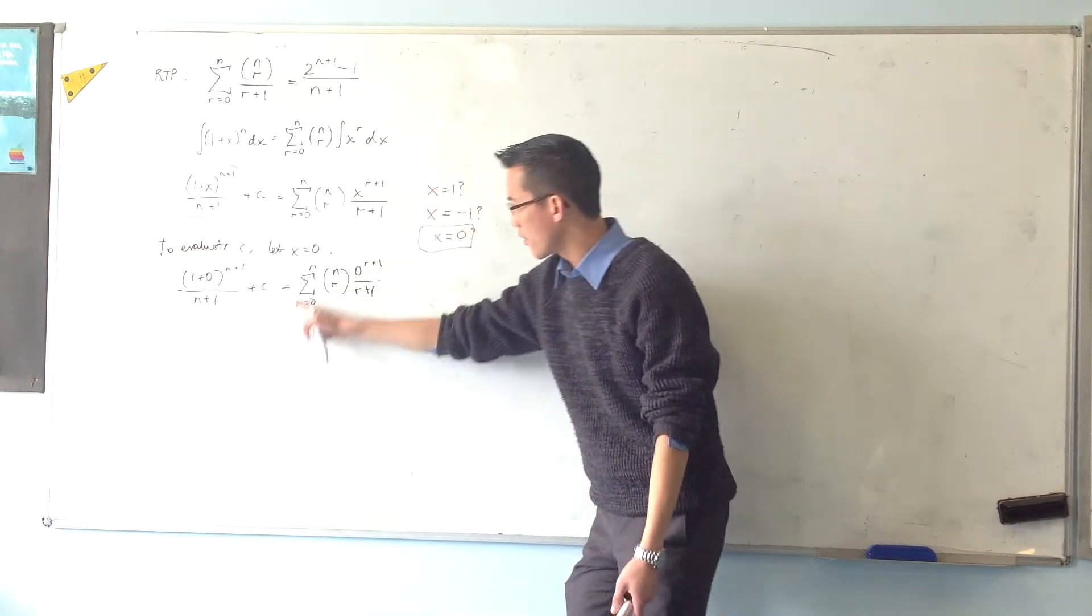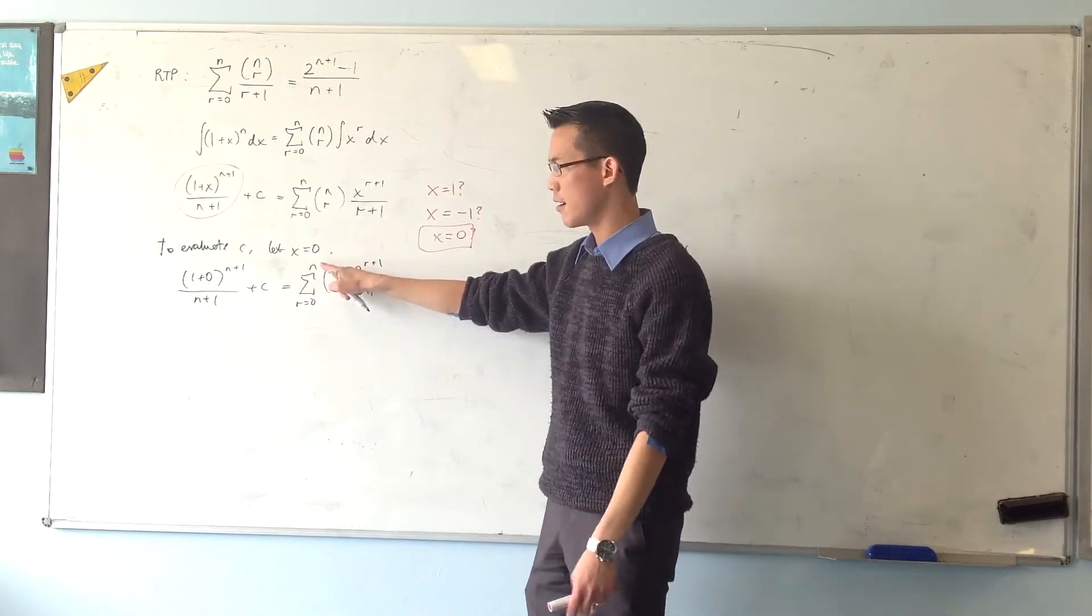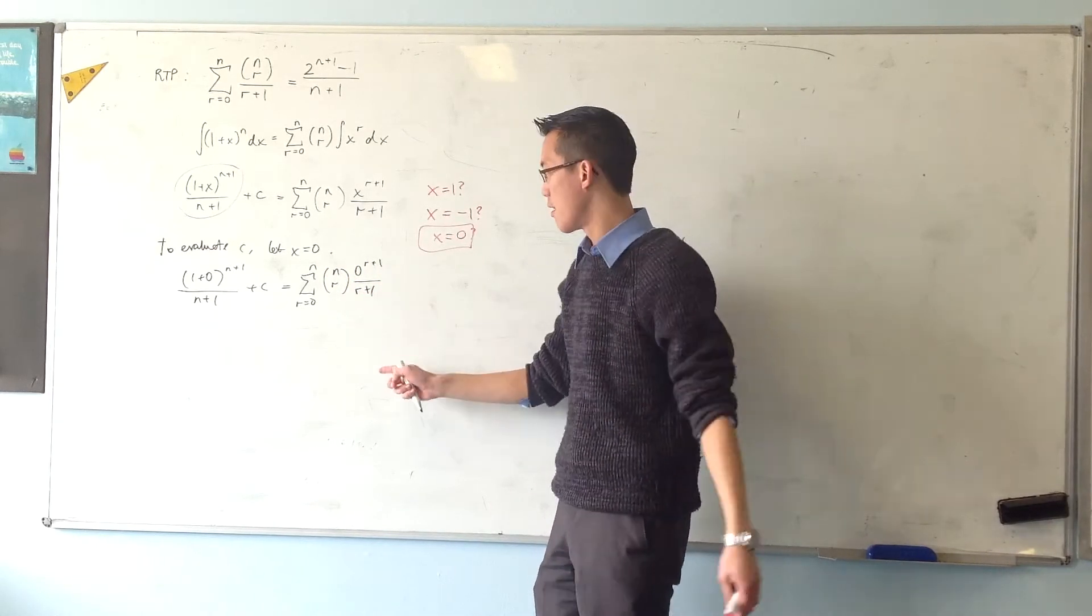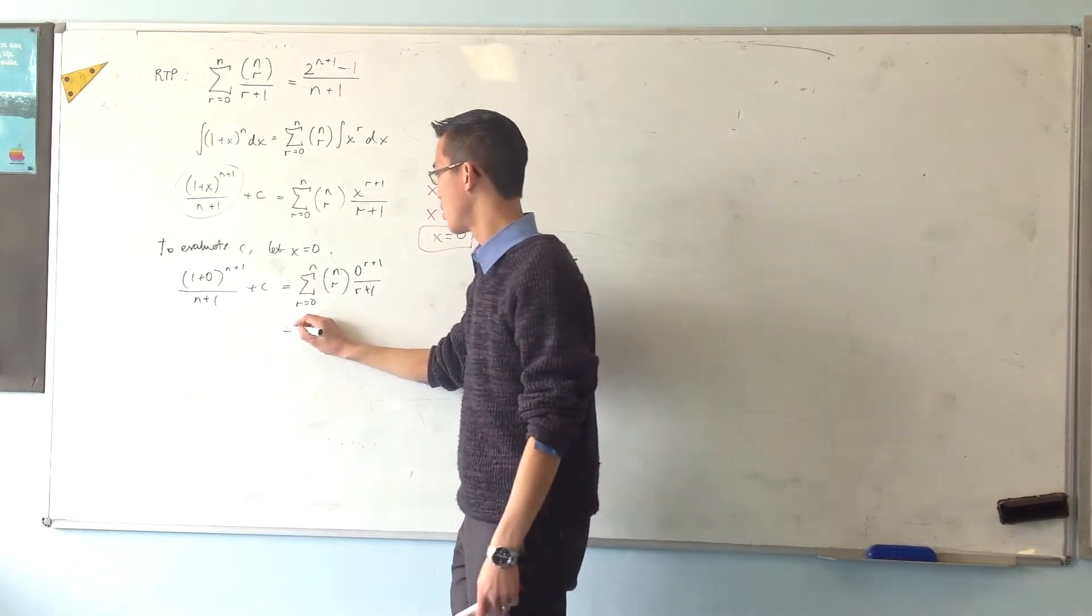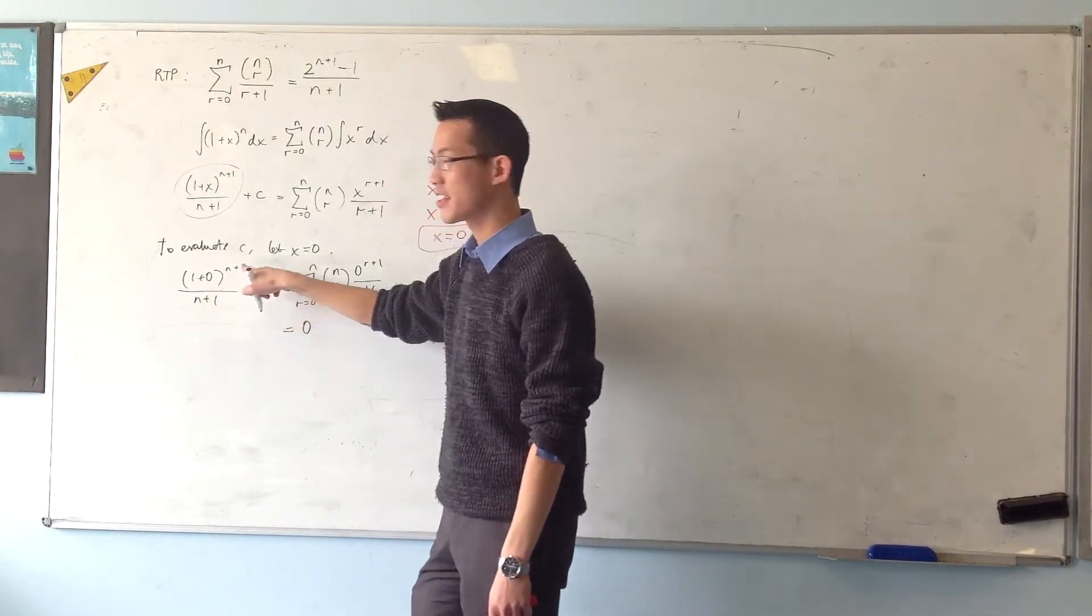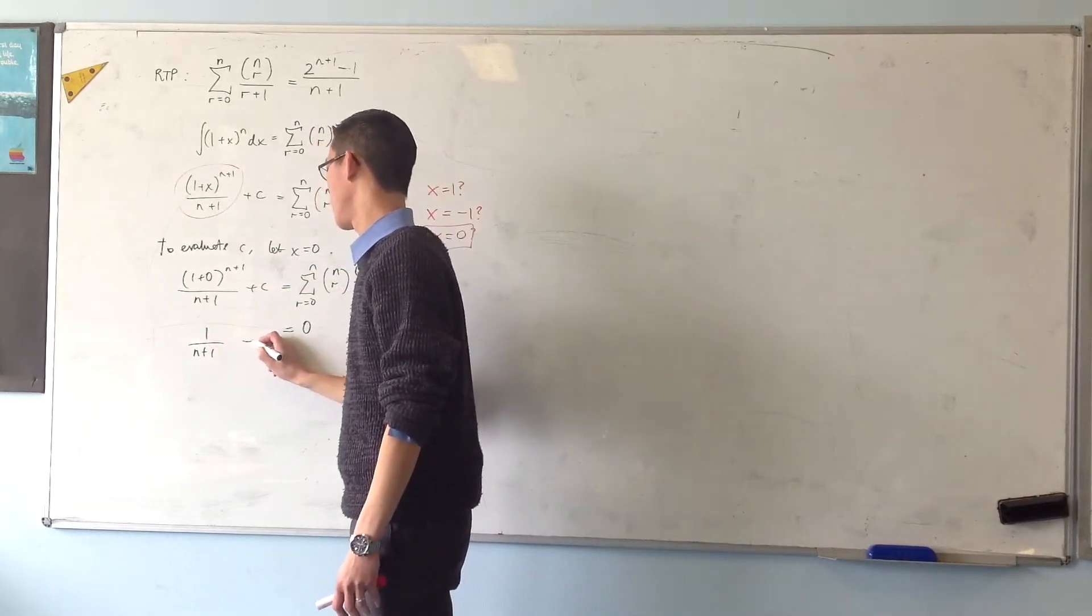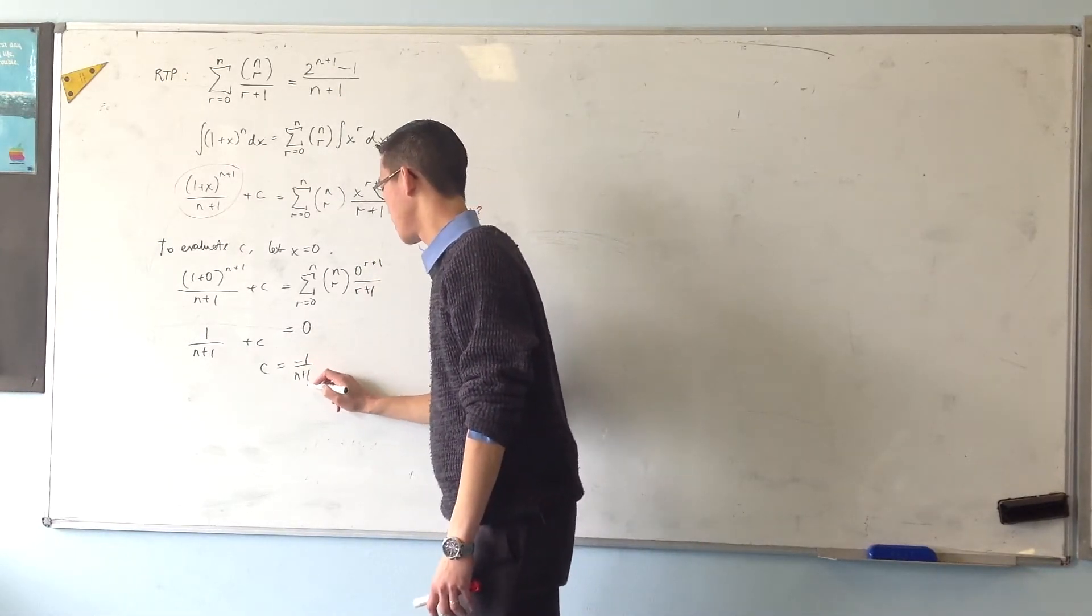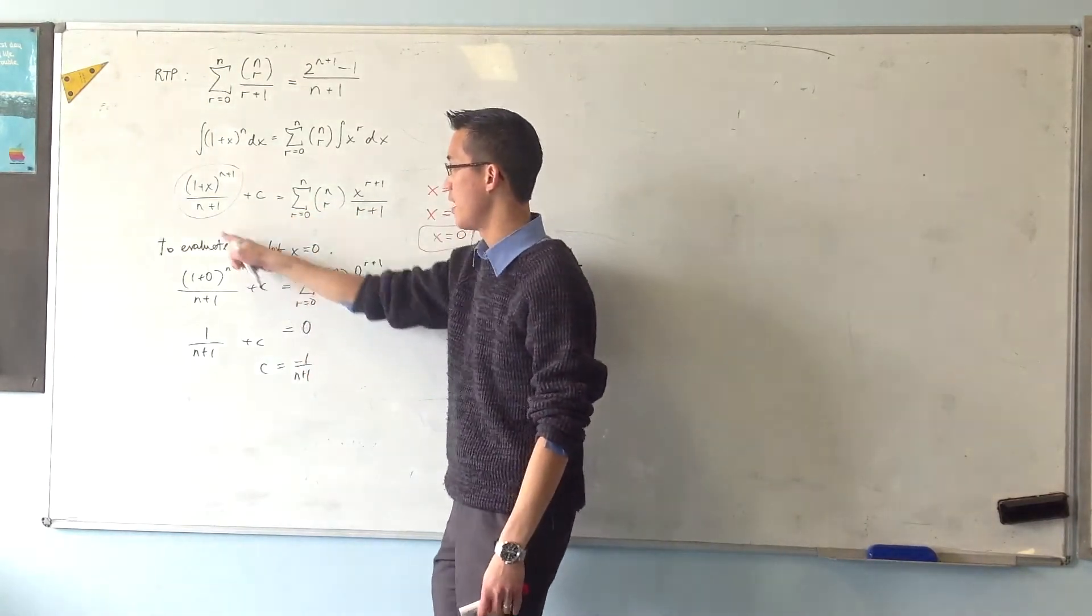So therefore, everything over here disappears. Even though it's a sum of a whole bunch of terms, n plus 1 terms, every single term in this series is 0, right? It's this times 0, and then the next one times 0, and so on. So this right-hand side is 0. What do I have over here on the left? This is 1 to the power of something, right? And that's always just 1. See that? So therefore, now I get my constant.